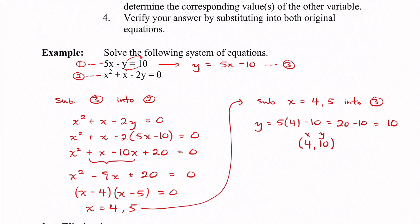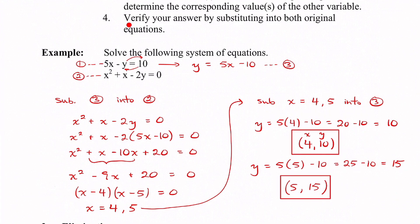For x equals 5: y equals 5 times 5 minus 10, which is 25 minus 10 equals 15. So our second solution is (5, 15). Step 4: verify your answer by substituting into both original equations. Putting x equals 4 and y equals 10 into equation 1 should give 10, and into equation 2 should give 0. Both solutions verify. That was our substitution method.